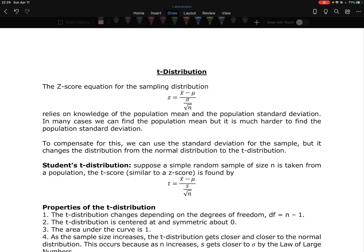So the z-score equation for the sampling distribution of the sample mean was z equals x-bar minus mu over sigma divided by the square root of n. This equation relies on us being able to know the population mean and the population standard deviation. In a lot of cases, we might be able to know the mean, but it's going to be a lot harder, probably impossible for us to find what the population standard deviation is.